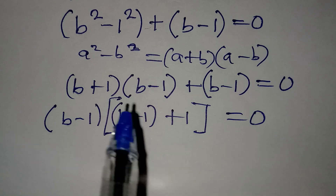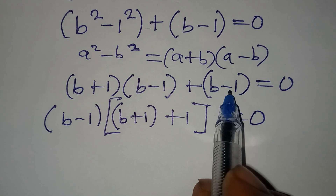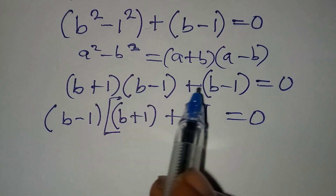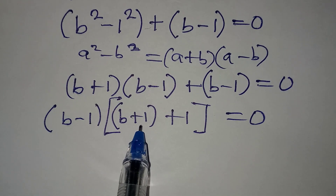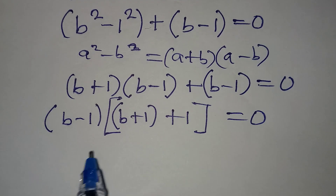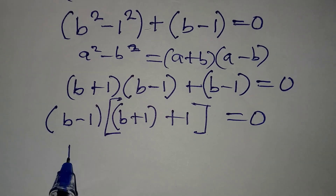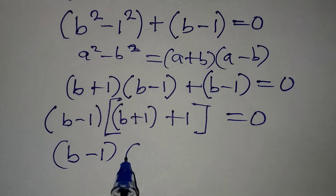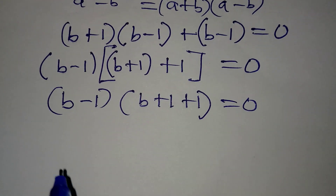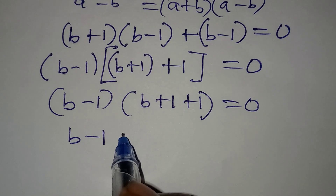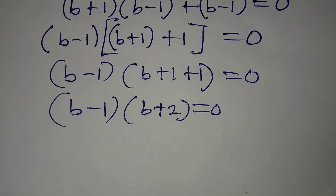Let me go over it again: we have (b + 1)(b − 1), and then plus (b − 1). We bring out (b − 1) from both terms; what's left is b plus 1 from the first part, and 1 from the second part, giving (b − 1)(b + 2) equals 0.